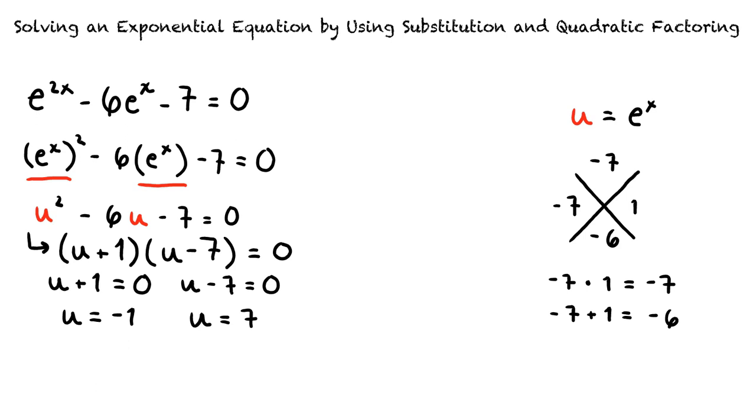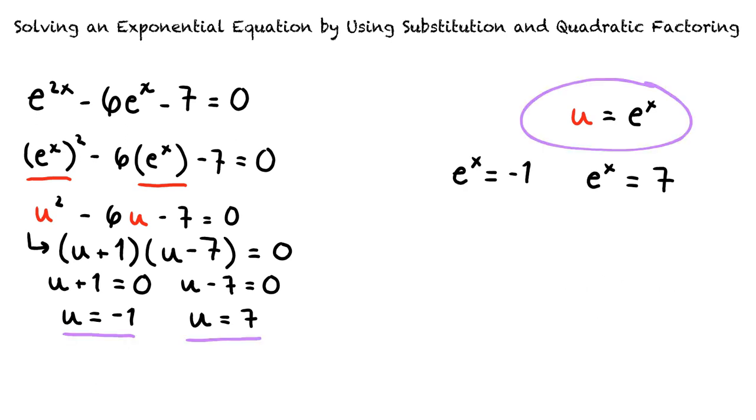So, is our final solution negative 1 or 7? Close, but not quite. Remember, we must undo the u substitution we applied earlier so we can solve for x, not u. Since u equals e to the power of x, the following is true. e to the power of x equals negative 1 or e to the power of x equals 7.